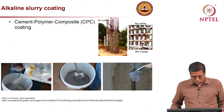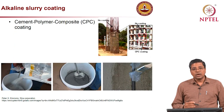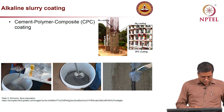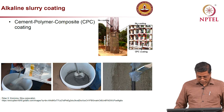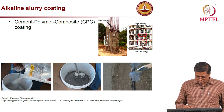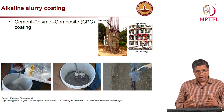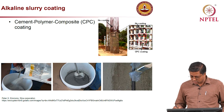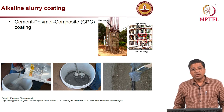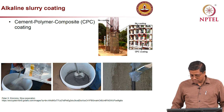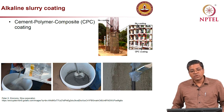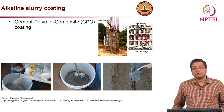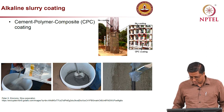Alkaline slurry coating: a powder is mixed with cement slurry to produce a highly alkaline, cementitious material which is then applied onto the rebar surface. This provides an alkaline environment, a mechanical barrier, and gives very good resistance against corrosion.